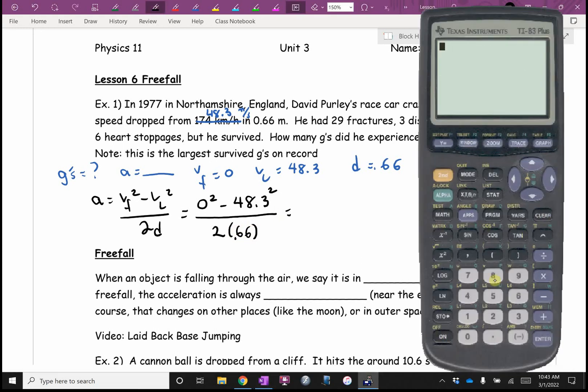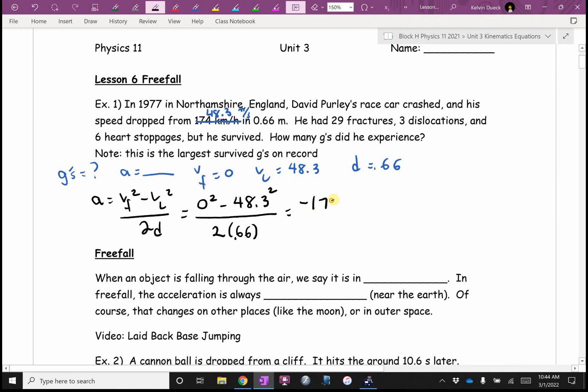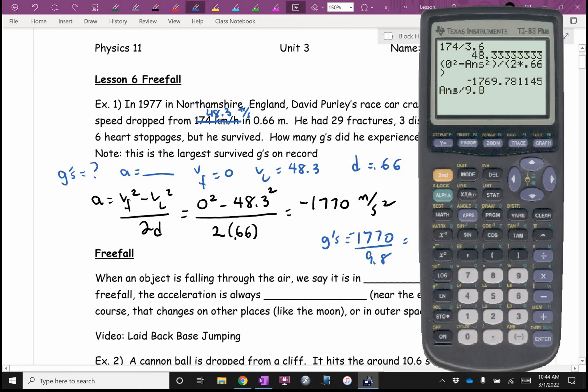I need to get that 48.3 on my calculator. So that was 174 divided by 3.6. So bracket 0 squared minus answer button squared close bracket divided by 2 times 0.66. So this is the acceleration in meters per second squared. It's pretty big. Why is it negative? Slowing down. I'm going to write negative 1,770.